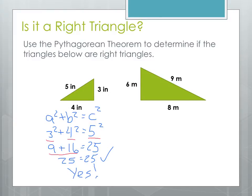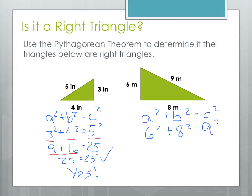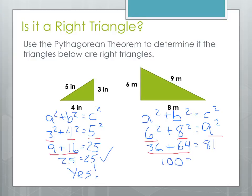Now let's try the one on the right. Again, our formula: A squared plus B squared equals C squared. The legs are 6 and 8, so we'll plug those in for A and B, and the hypotenuse is 9. We do the exponents: 6 squared is 36, plus 8 squared is 64, equals 9 squared which is 81. Adding the left side: 36 plus 64 is 100, which would have to equal 81. That's a false statement — 100 does not equal 81 — so since the Pythagorean Theorem does not hold, this is not a right triangle.